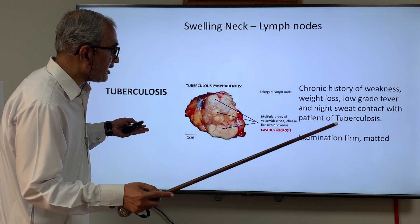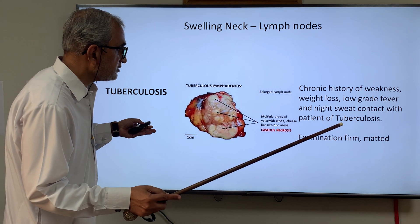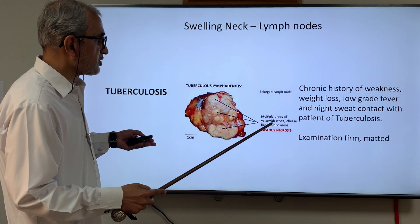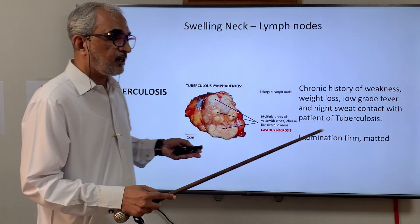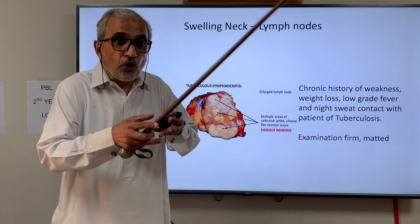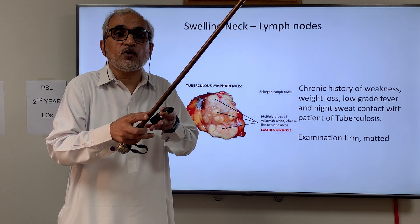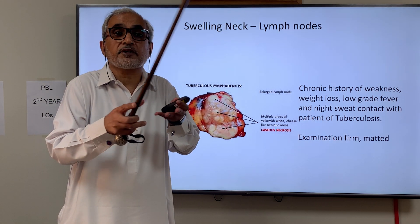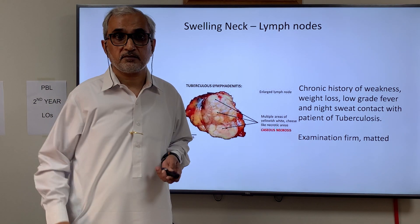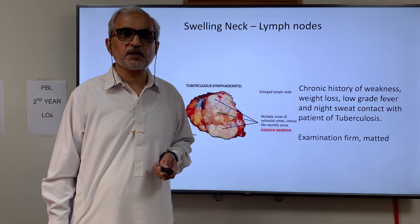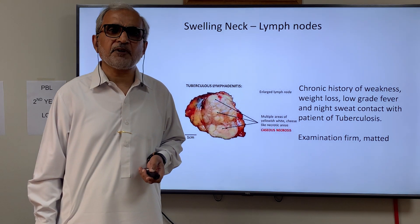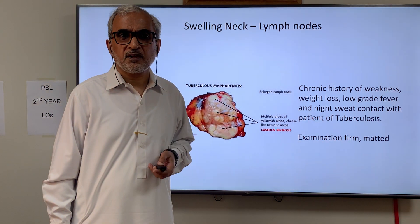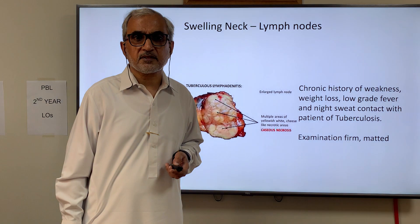As the lymph nodes enlarge and mat together, they form a mass. The multiple matted lymph nodes give rise to a matted appearance. If there is only one lymph node initially, it may not yet give that matted appearance.